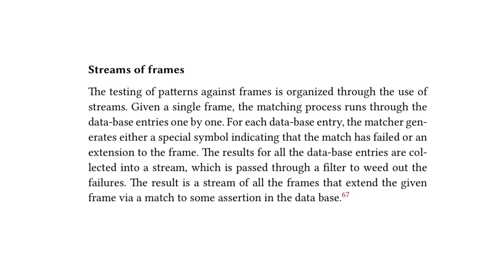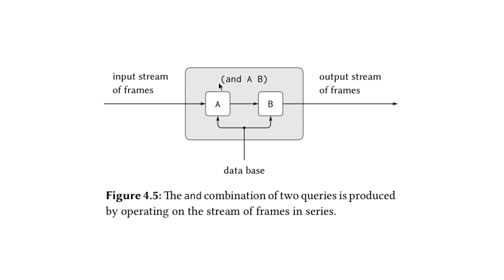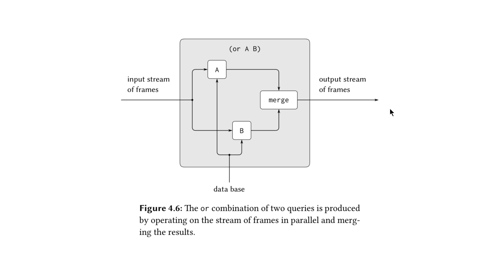Diagrams in the text show how the stream of frames is modified by query type. For a simple query, you do a stream flat-map. For a compound AND statement, it performs filtering — both conditions must be satisfied to reach the output stream. For OR, it's more like merging two streams based on two different conditions, using a procedure called interleave, which we implemented back in Chapter 3.5.